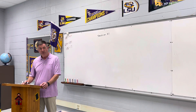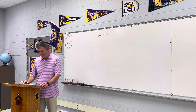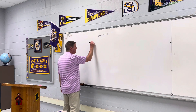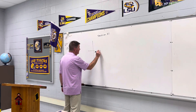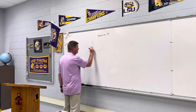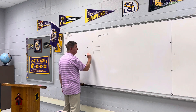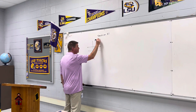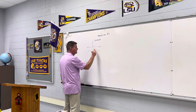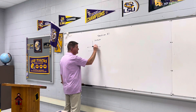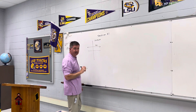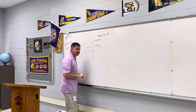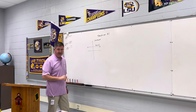The first one is called a constant function. A constant function is a horizontal line. In function notation, f(x) = c, where c is just some number.